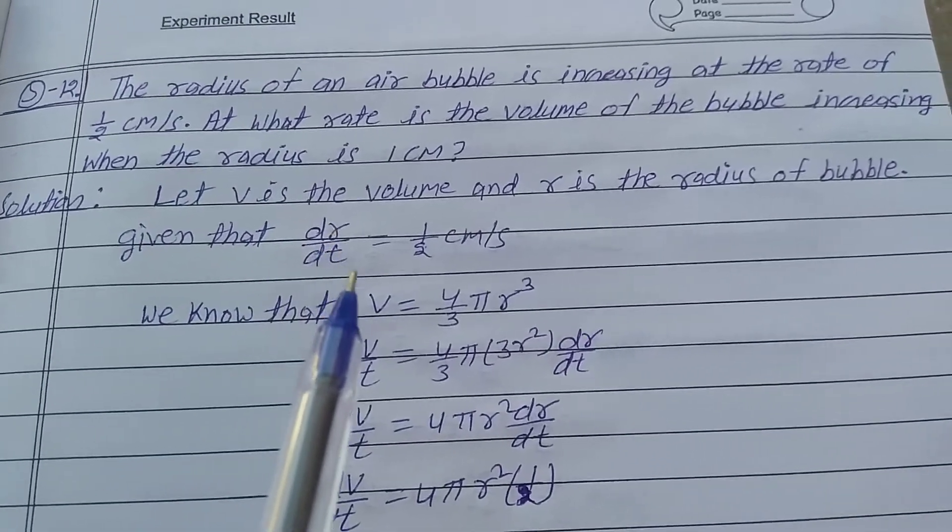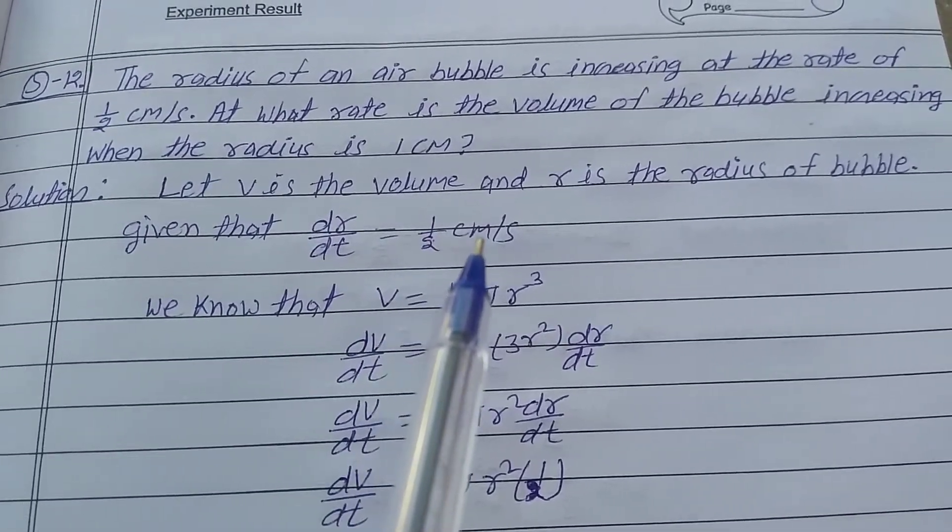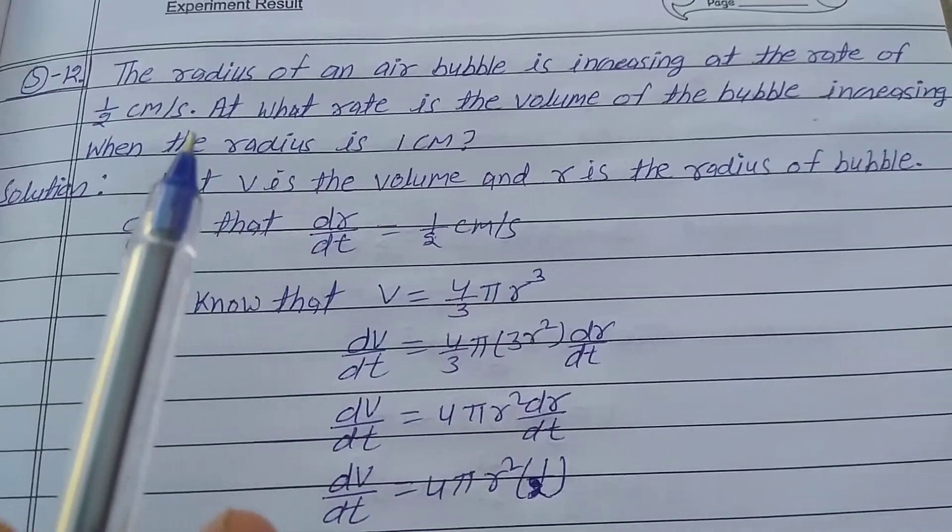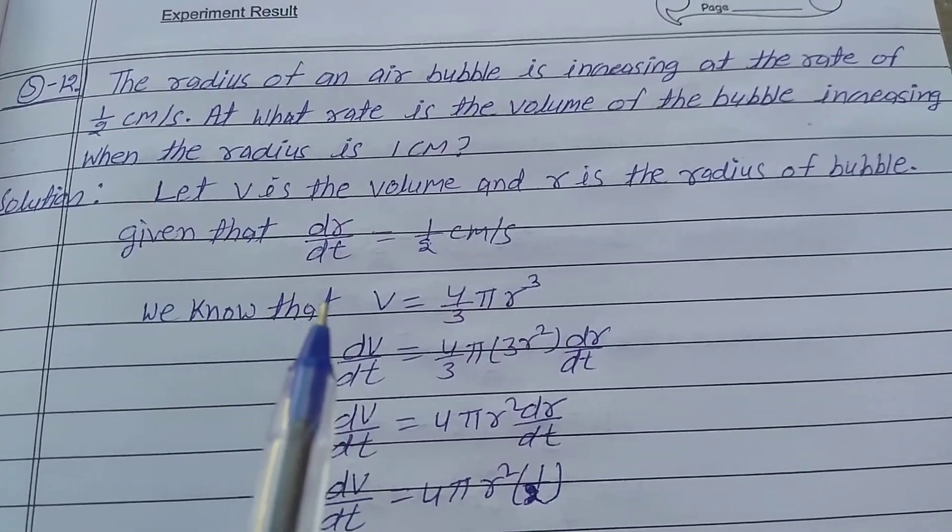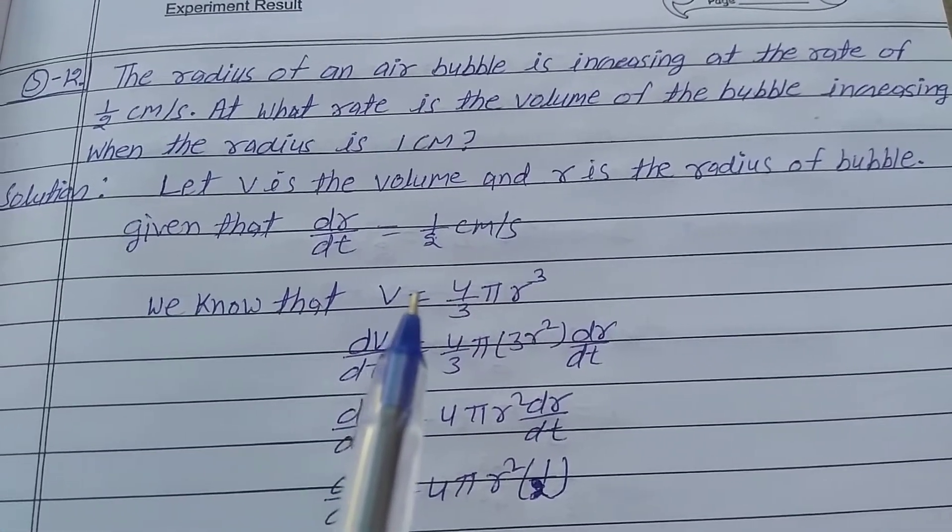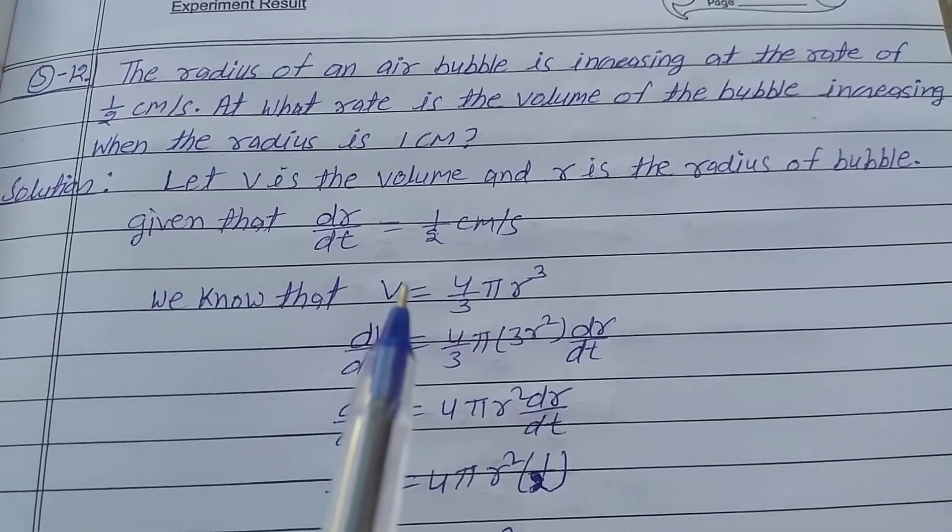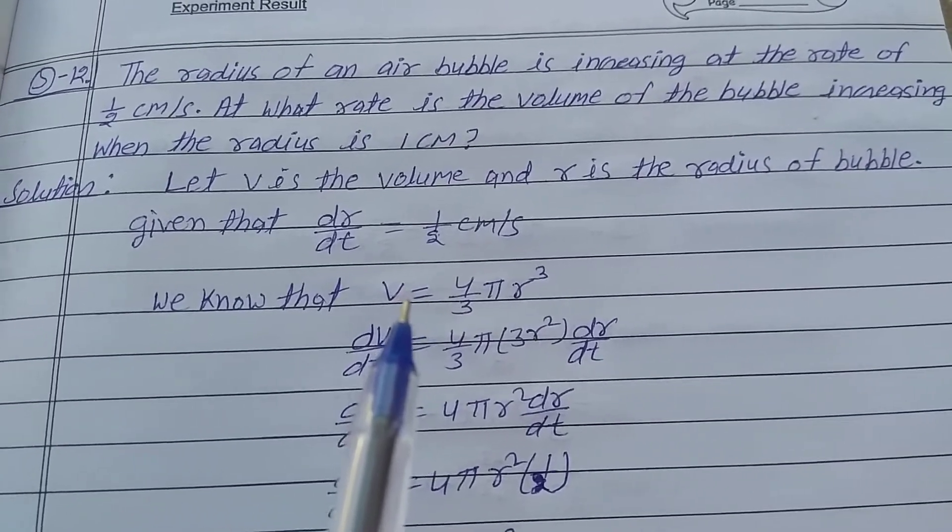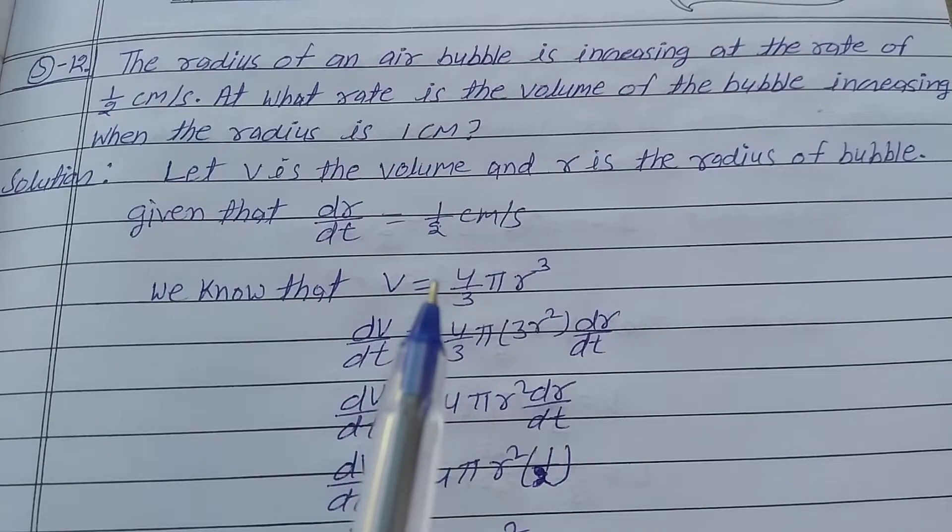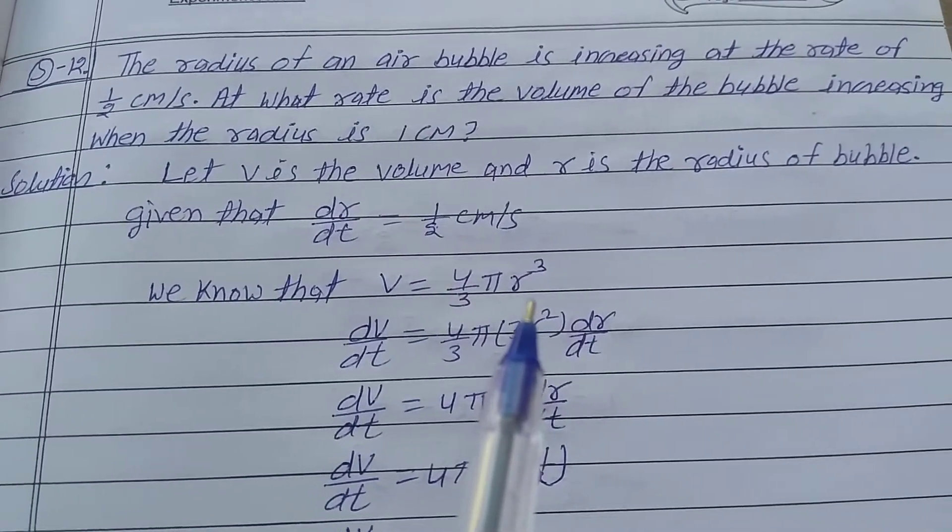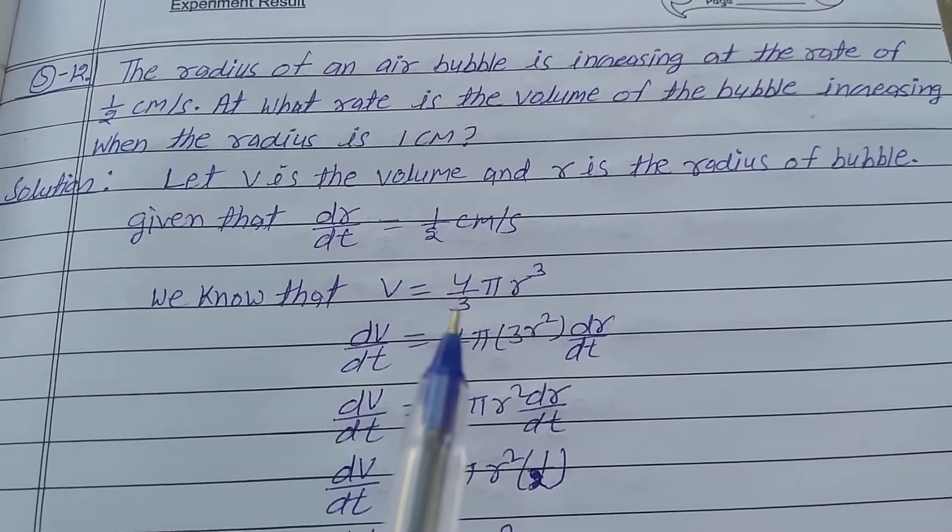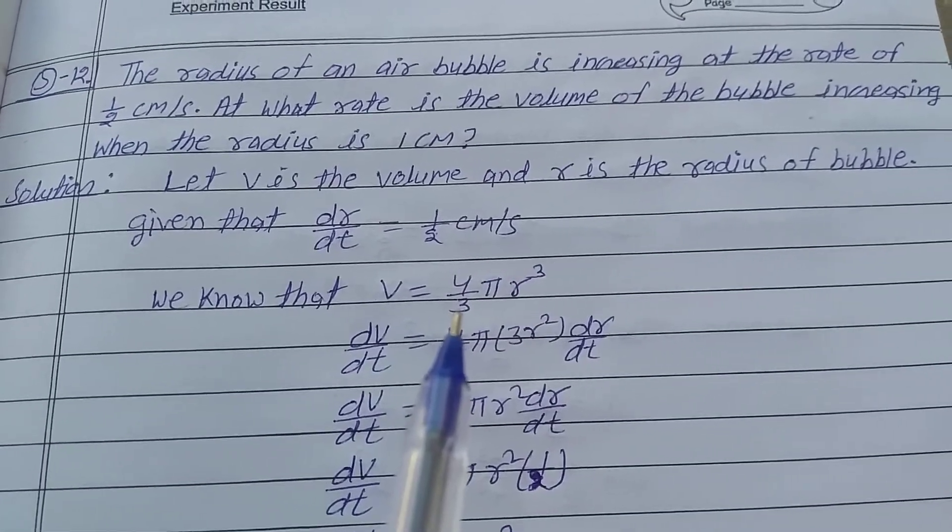Given that dr/dt = 1/2 centimeter per second. We know that the bubble is spherical, so V = (4/3)πr³. That is the formula for the volume of a spherical bubble.